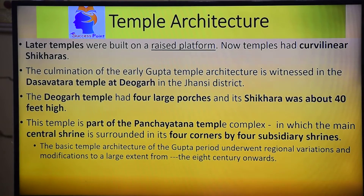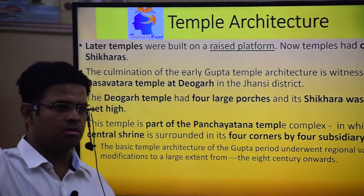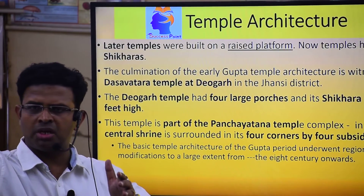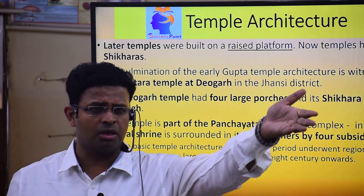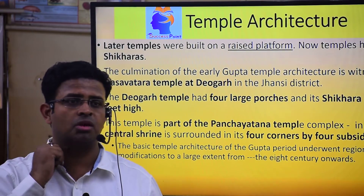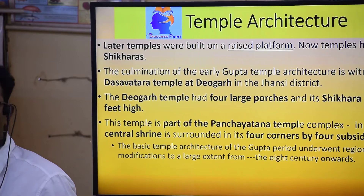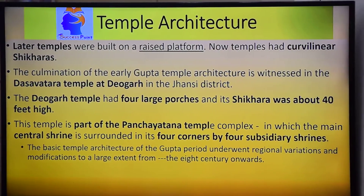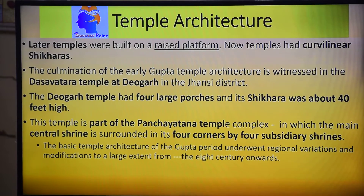The Dasha Avatar Temple is part of the Pancha Yatana style. In a Pancha Yatana temple, the main deity is in the sanctum sanctorum, and four subsidiary shrines — such as Parvati, Ganesh, Kartikeya — surround it on the cardinal axes. This family arrangement, known as Parivara, is typically structured in the South, not the North.